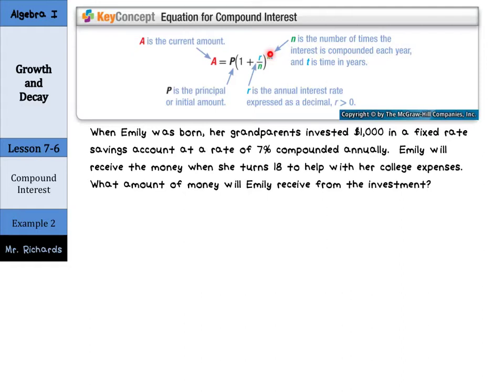When Emily was born, her grandparents invested $1,000 in a fixed rate savings account at a rate of 7% compounded annually. Emily will receive the money when she turns 18 to help with her college expenses. What amount of money will Emily receive from the investment?